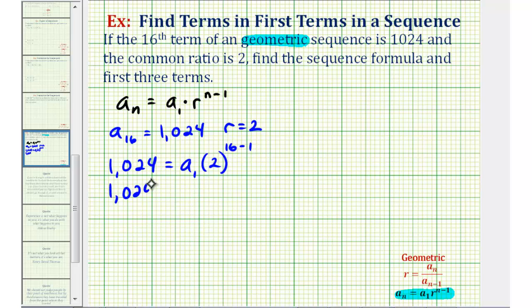So we have 1024 equals, this would be a sub one times two to the 15th. So now to solve for a sub one, we'll divide both sides by two raised to the power of 15.